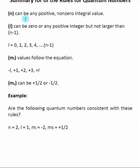In this first example, the n value is equal to two. n can be any positive non-zero integer, so that is correct. L is equal to one. L can be zero or any positive integer not larger than n minus one. n minus one in this case is one, so L equal to one is okay.